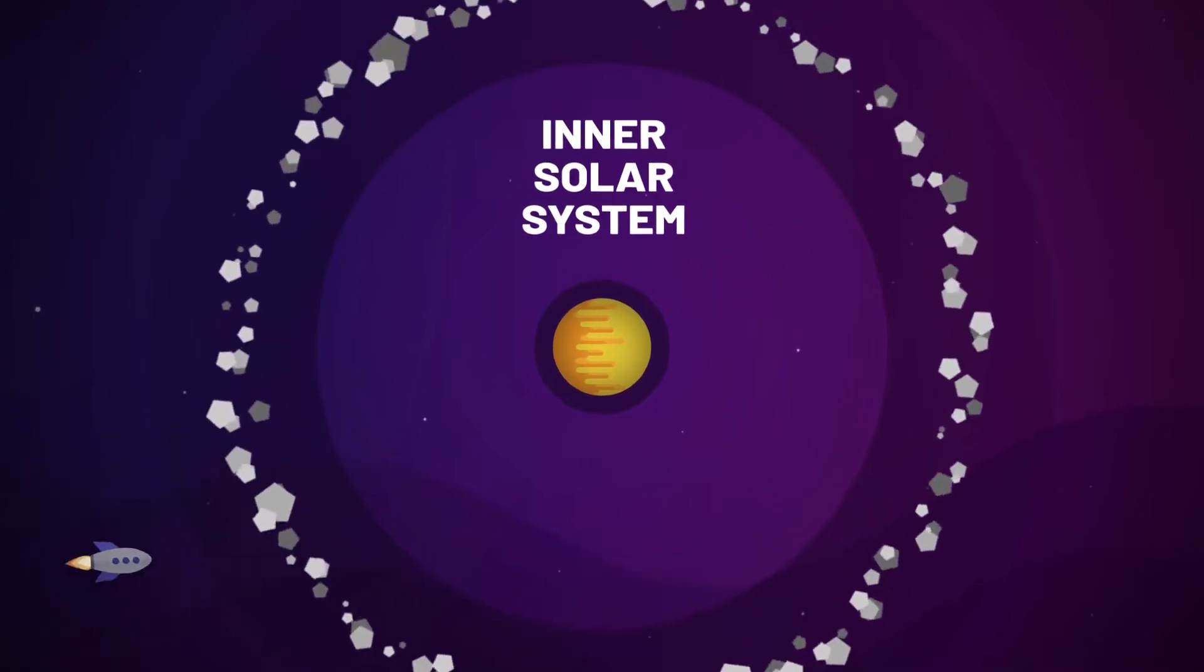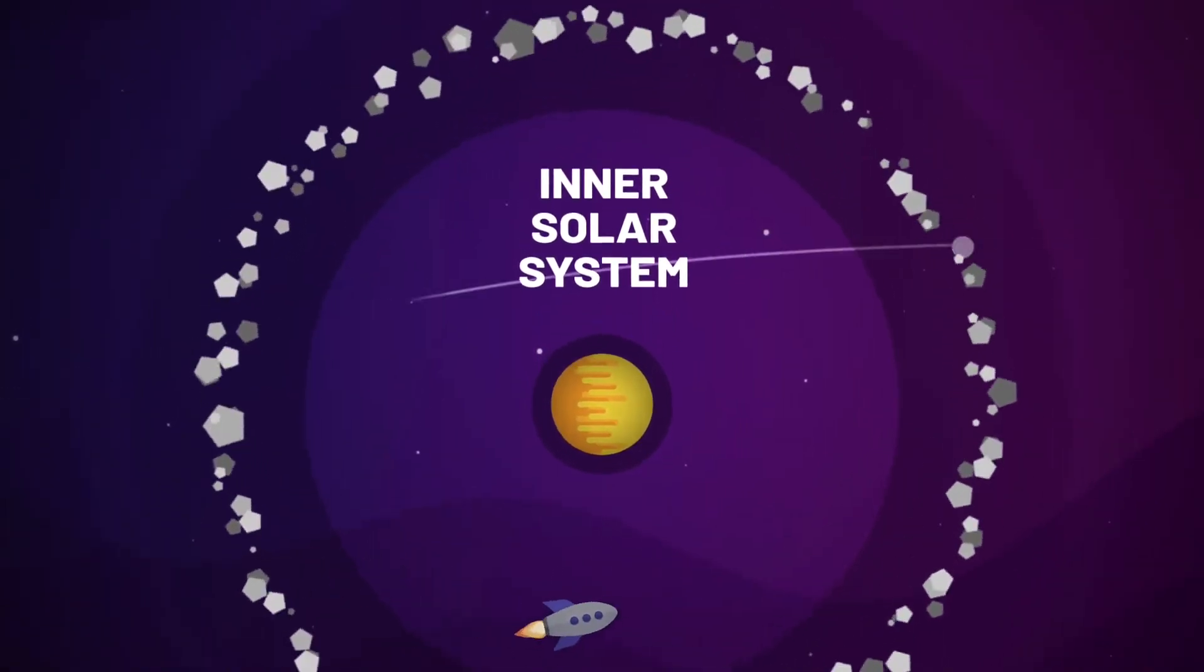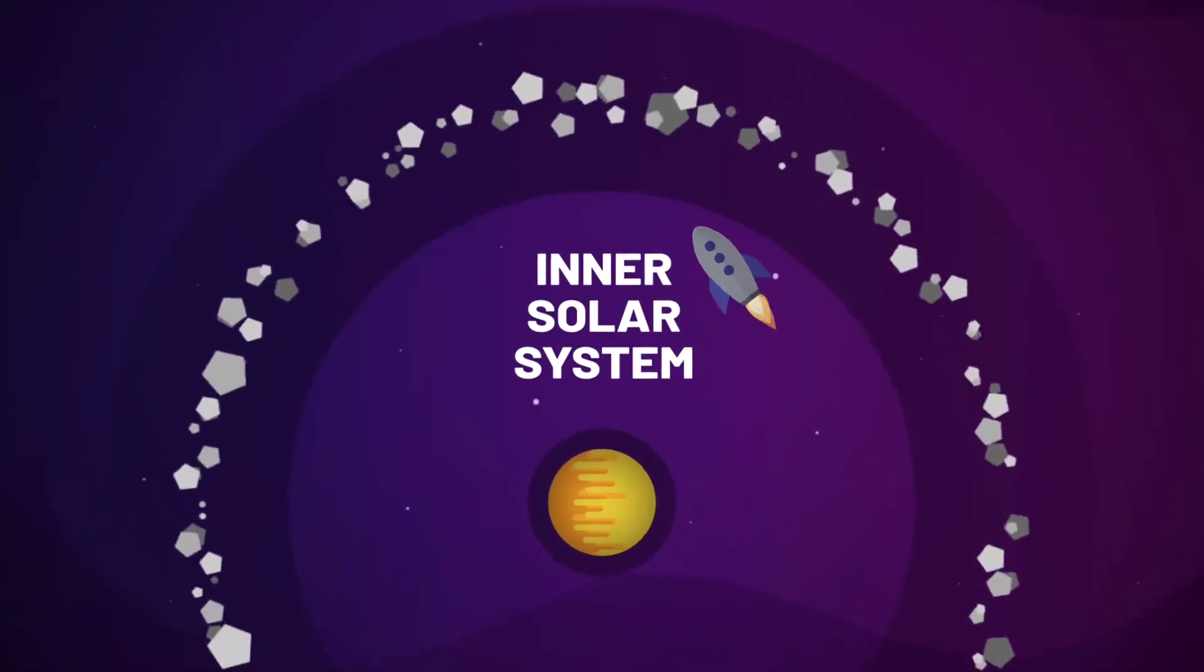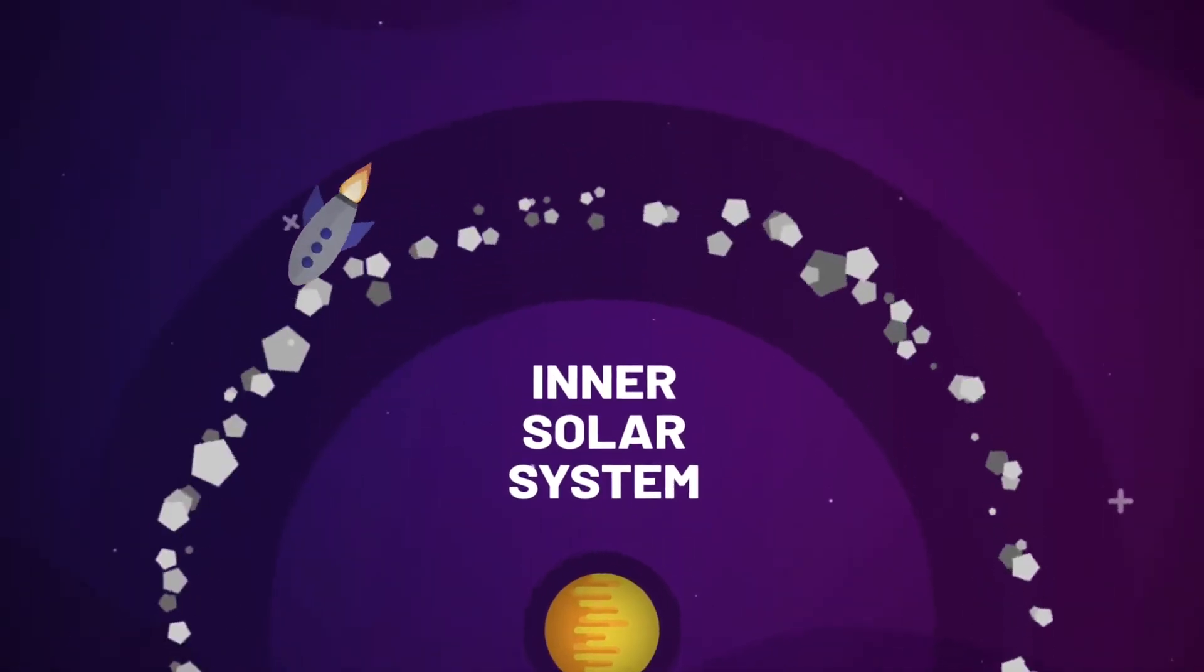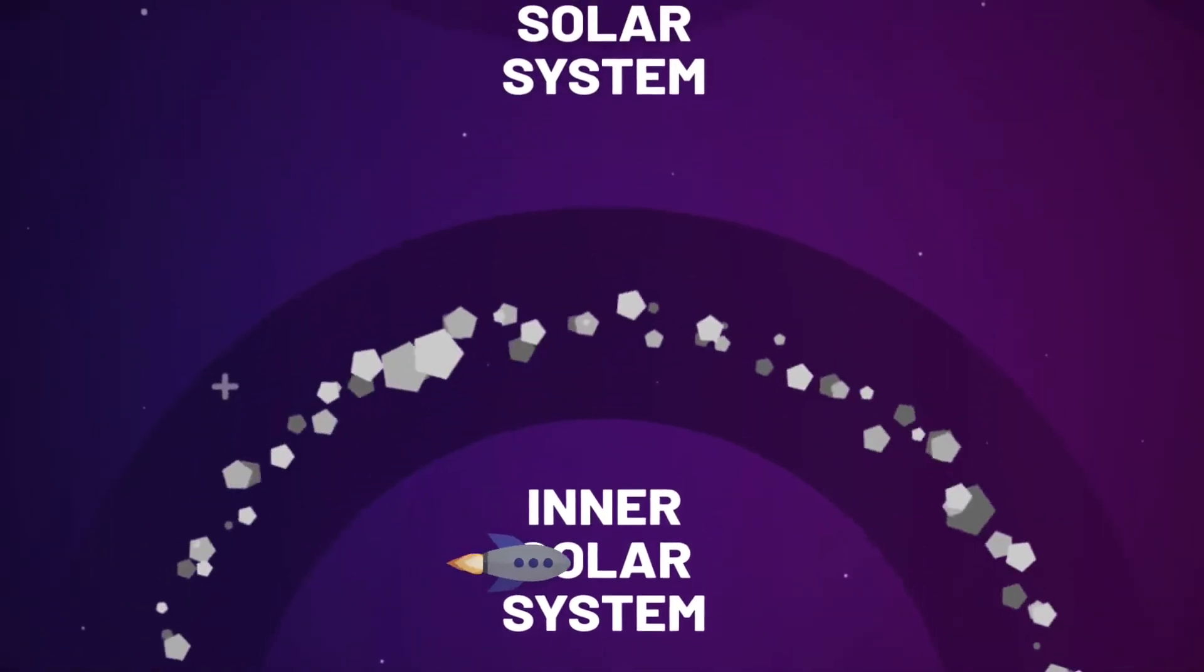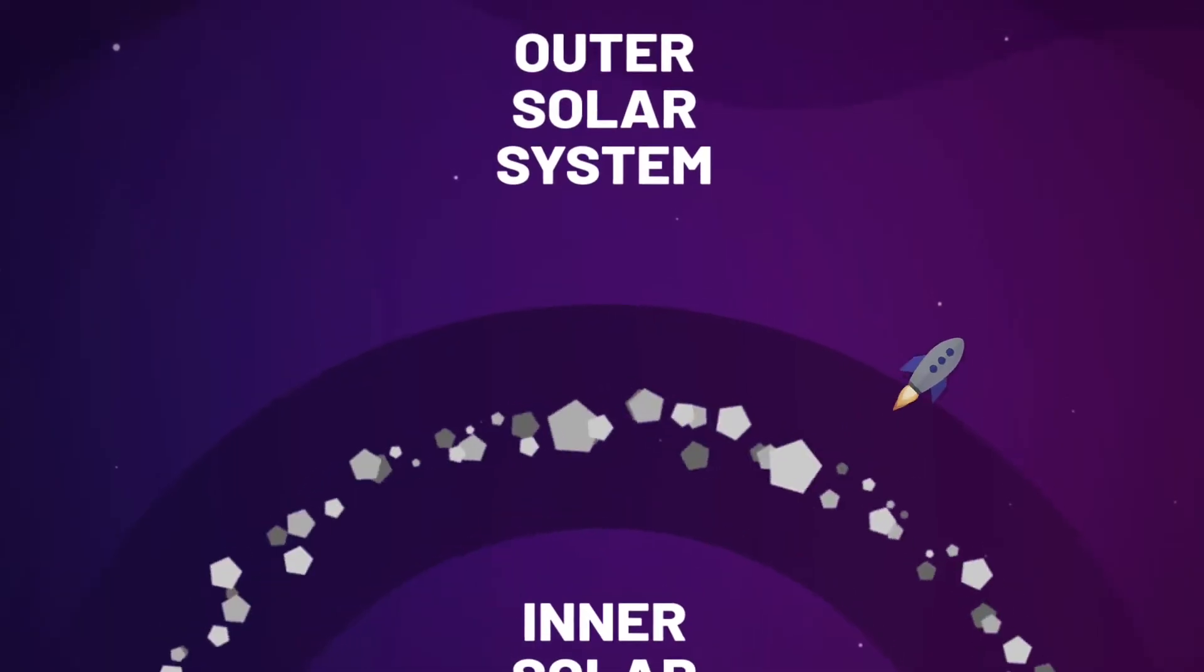The Asteroid Belt serves as a buffer zone between the four inner rocky planets and the four outer gas planets of our solar system. And it's necessary to cross this busy realm on our solar system journey.